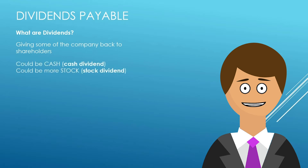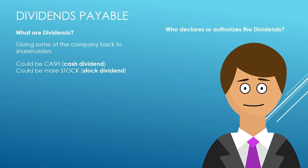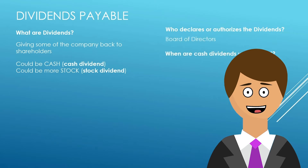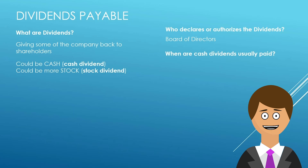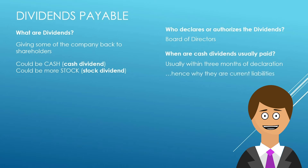It could be a cash dividend — giving them cash. It could be a stock dividend — giving them additional stock: common shares, preferred shares, whatever the stock dividend may be. The board of directors declares or authorizes those dividends. Cash dividends are usually paid within three months of declaring a dividend, hence why they are current liabilities.